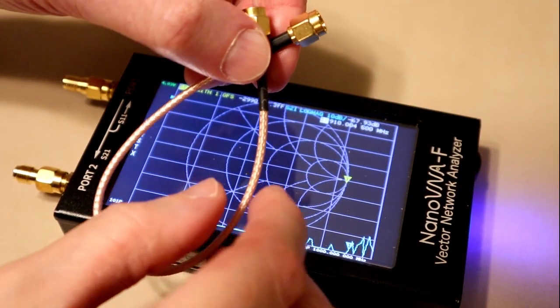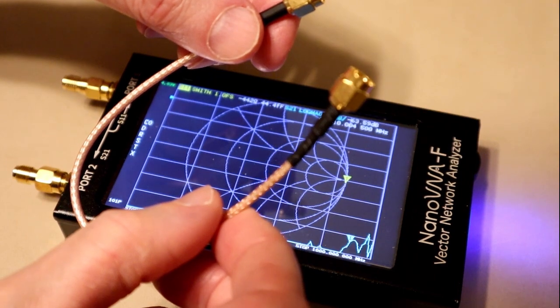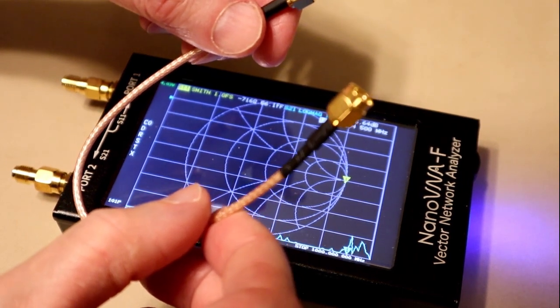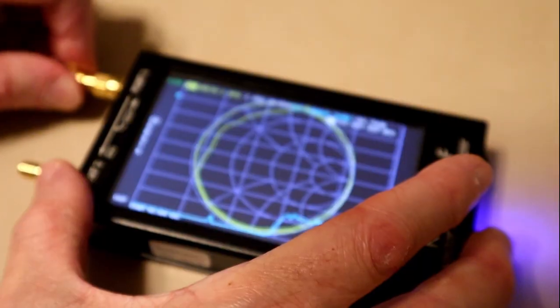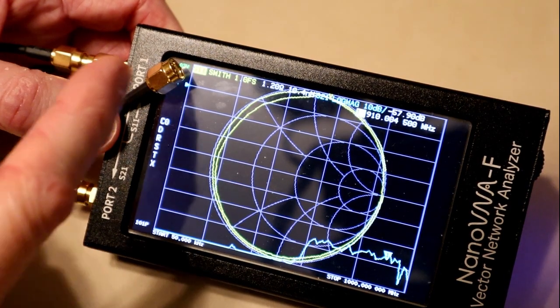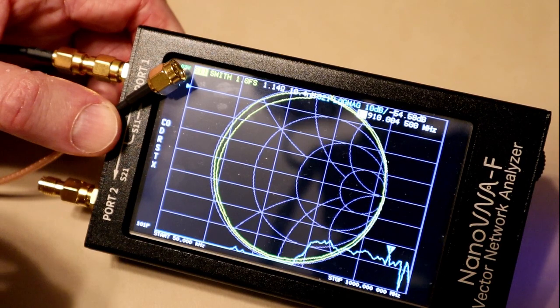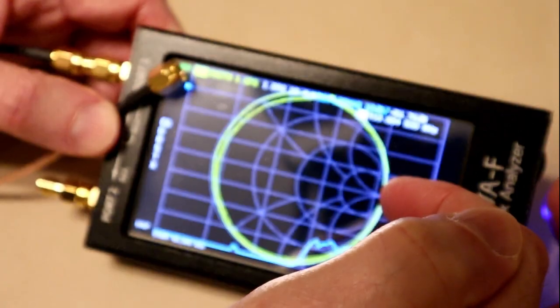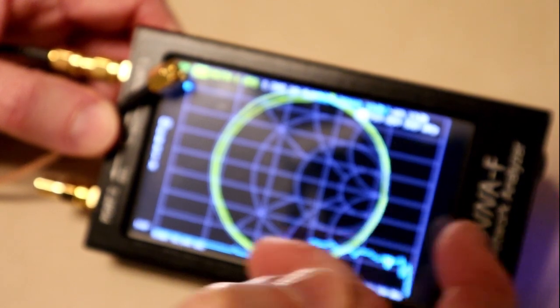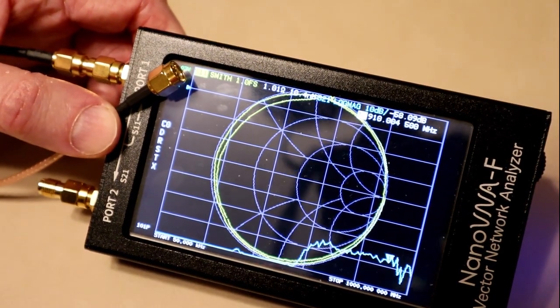But let's watch what happens when we attach a cable onto here that was not present when we did the original calibration. For this, I'm just going to use one of the original 20-centimeter cables that comes with the VNA. And I'm going to attach it to port 1. The cable is still an open circuit, but now the point is not over at the right-hand side, at least not at all frequencies. It's instead anywhere on the chart. It's wrapped around the chart several times.